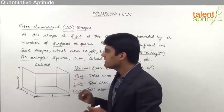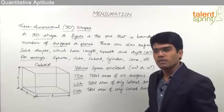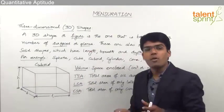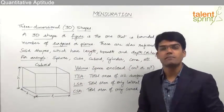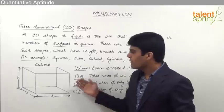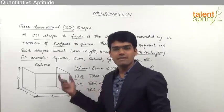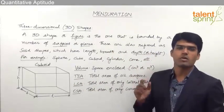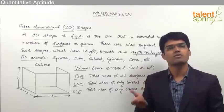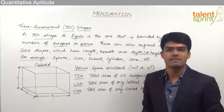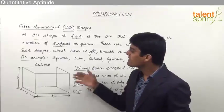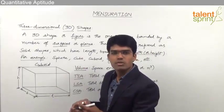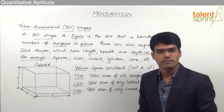Now, this cuboid is made up of 6 different planes: 4 lateral surfaces or surrounding surfaces, the base and the top. So 4 plus 2, total 6 surfaces. Six 2D shapes combined together give us a cuboid.